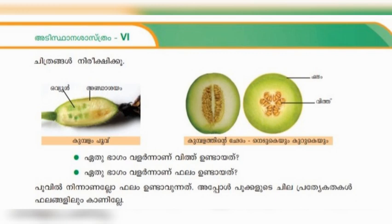Self-pollination is of two types. One involves androecium and gynoecium — the male and female reproductive organs — within the same species or same organism. It is also related to fertilization and pollination occurring together.